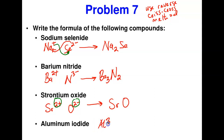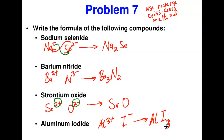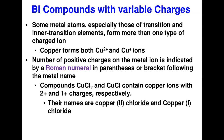For aluminum iodide: aluminum is in group 3 (3+); iodine is in group 7 (I⁻, one minus). Swap charges — aluminum takes 1 (not shown), iodine takes 3 — giving AlI₃. That is the formula for aluminum iodide. Always use the element's standard symbol from the periodic table — writing it incorrectly changes the identity of the element entirely.